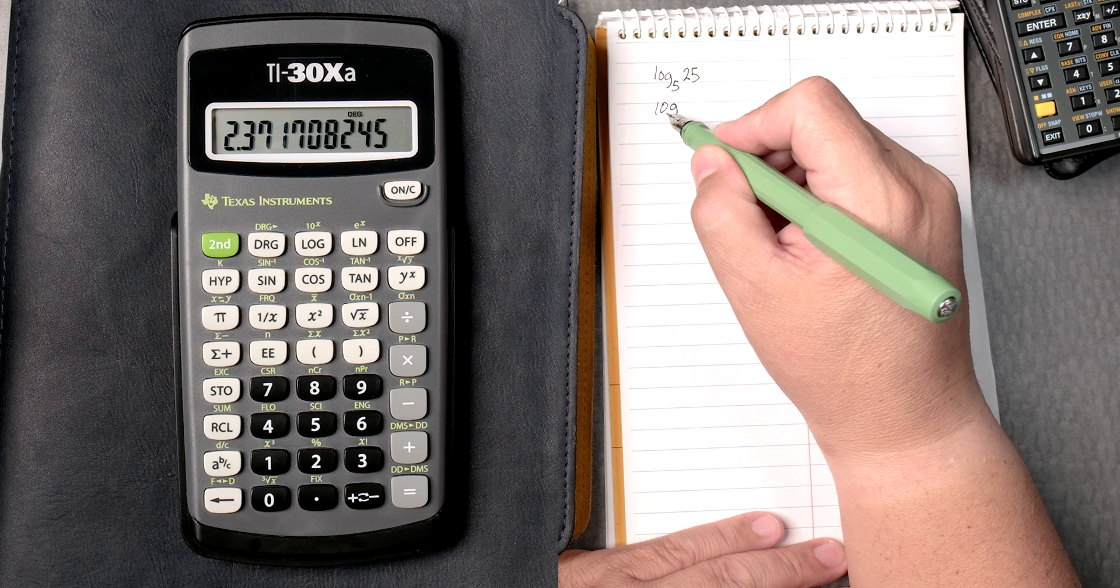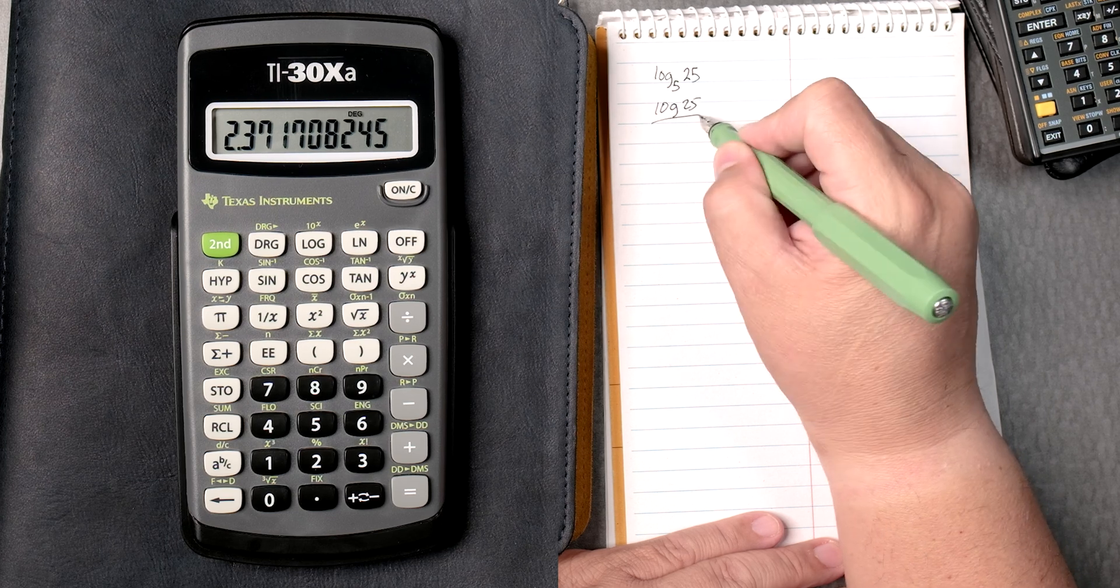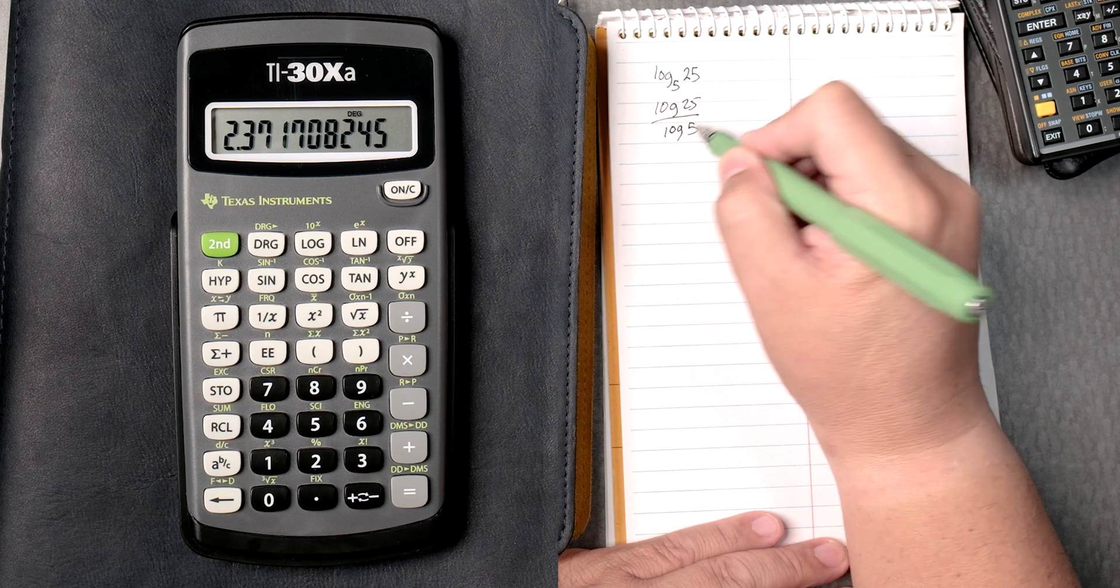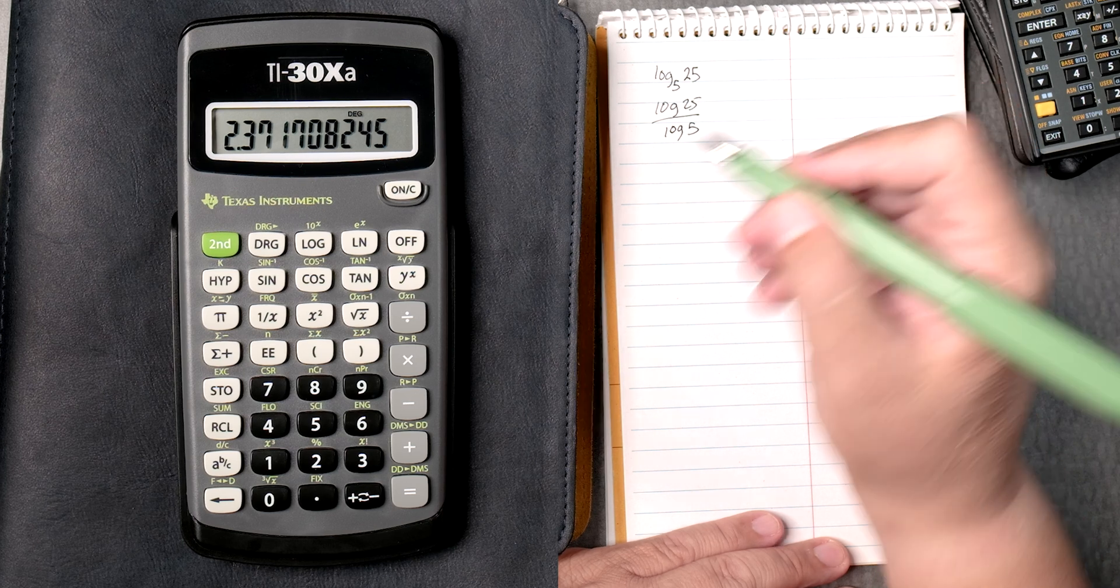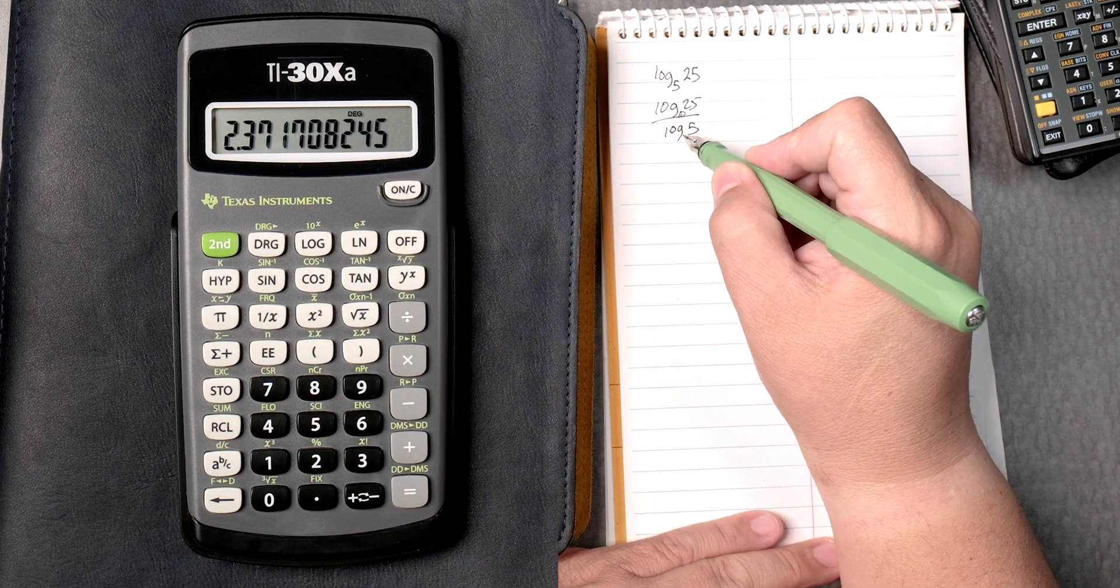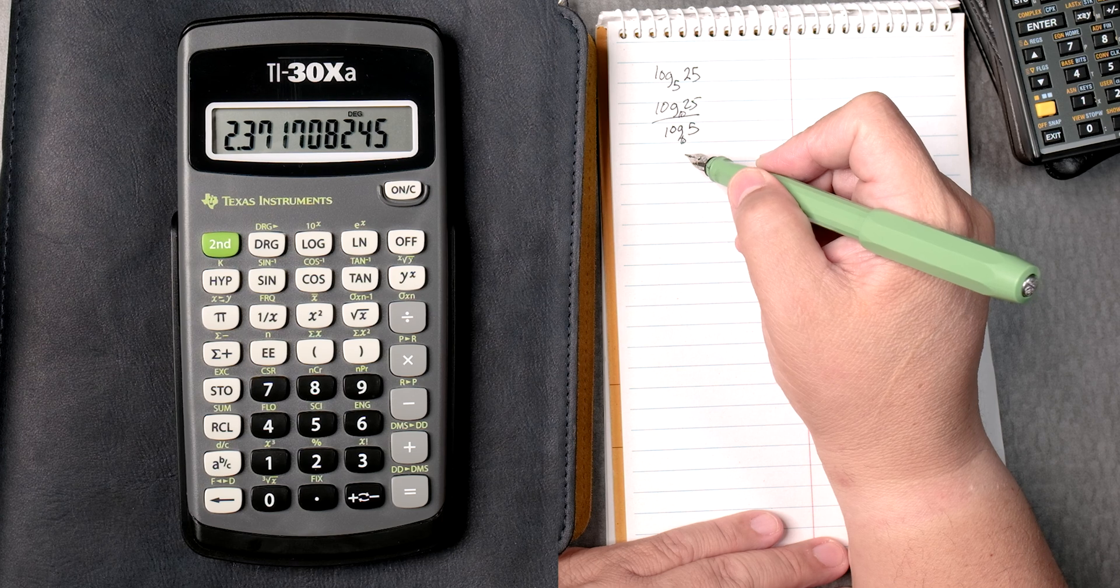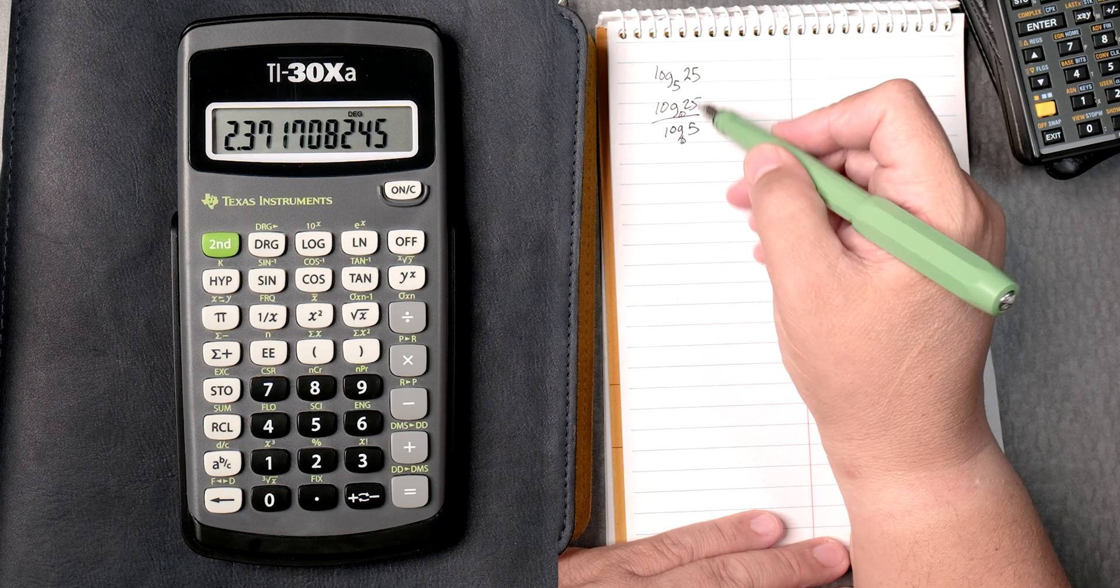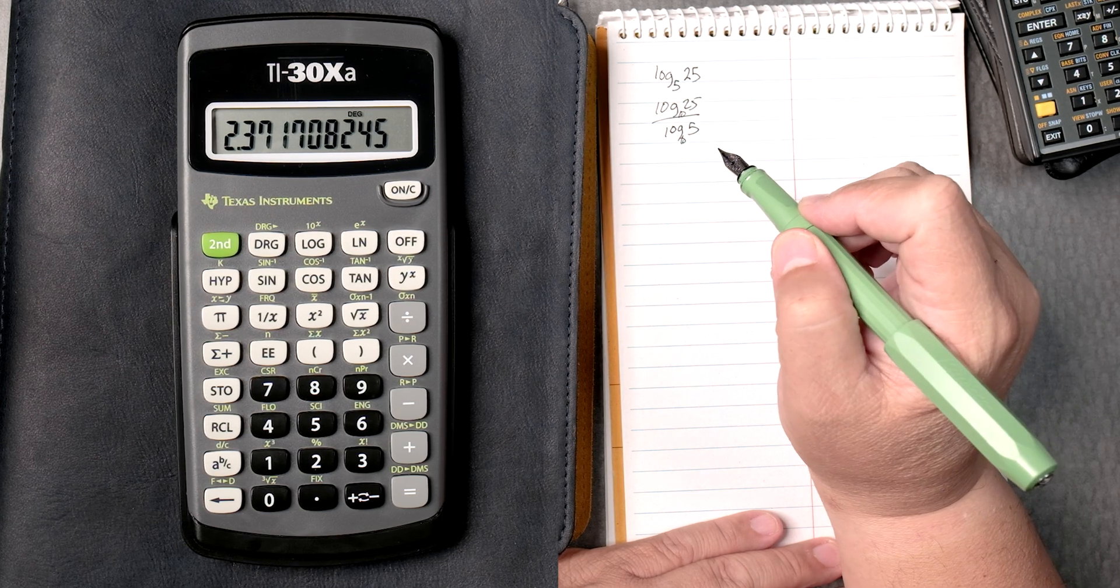There's a shortcut for this. That's the log of 25 divided by the log of 5. This is a base 5. This calculator does not have base 5, but it does have base 10, and this is the rule to do it. To remember it, 25 is in the top, 5 is in the bottom, do the logs in the top and the bottom.